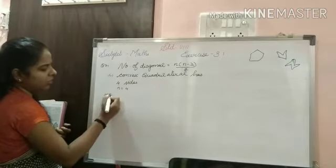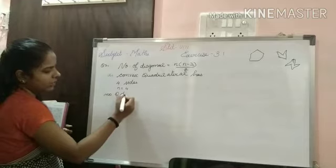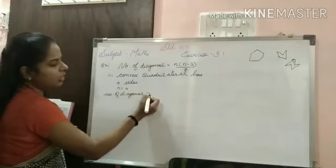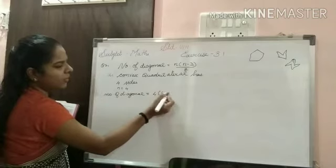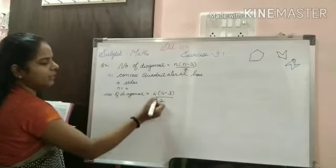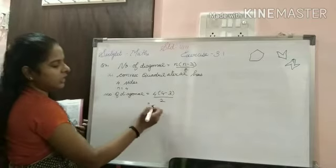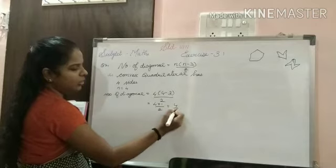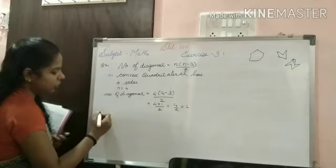So number of diagonal is equal to 4 into 4 minus 3 by 2. Here what is happening 4 into 4 minus 3 is 1. 4 into 1 by 2 is equal to 4 by 2 is equal to 2.